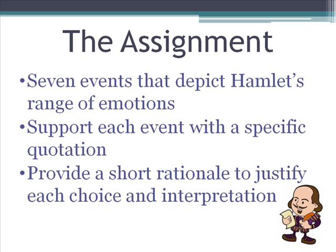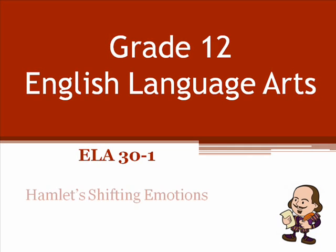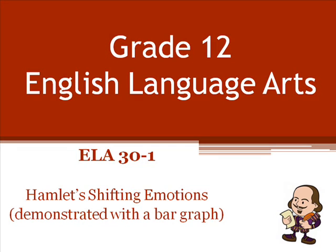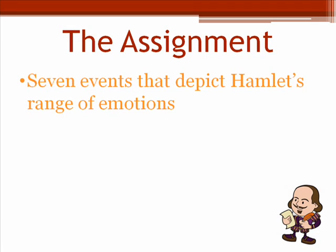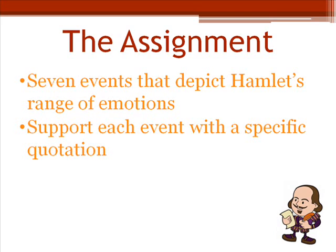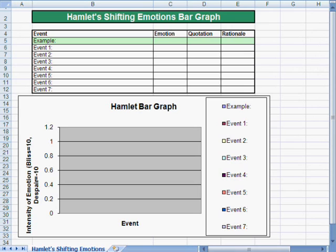Students are provided with an Excel template. This assignment is all about Hamlet's shifting emotions. You've already done a lot of the pre-work: you've chosen seven events that depict Hamlet's range of emotions, you've supported each emotion with a specific quotation, and you've provided a short rationale to justify your choices. Now we're going to work on putting all this information into a bar graph. Once you've downloaded the Excel file, it'll look something like this. We're going to go through and add in an example together, and then it'll be up to you to fill in the next seven.